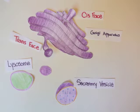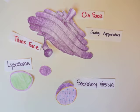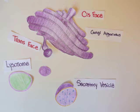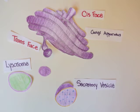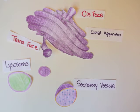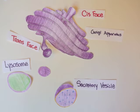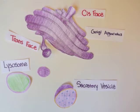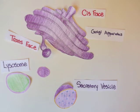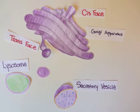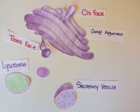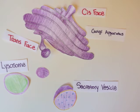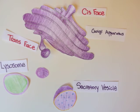The Golgi apparatus consists of several flattened membranous discs. The chambers within are called cisterni, similar to those within the endoplasmic reticulum. Vesicles from the endoplasmic reticulum carrying proteins initially arrive at the cis, or the forming face, of the Golgi apparatus, where they are taken in for modification by enzymes. The product exits from the trans, or the maturing face, which is most superficial to the cell's plasma membrane.